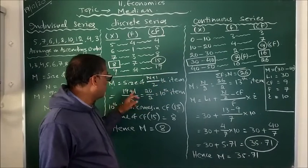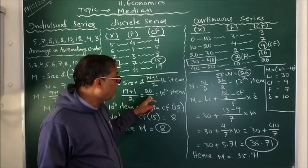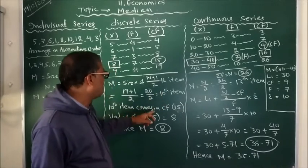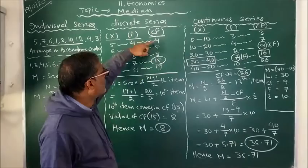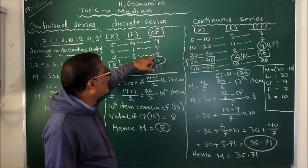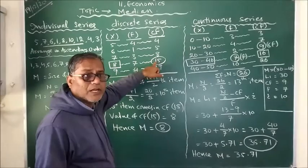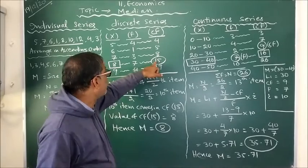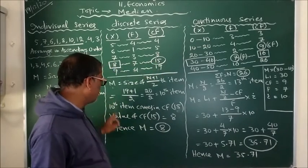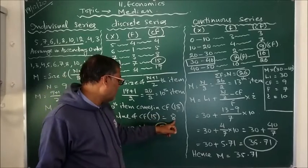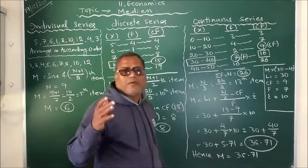So the 10th item in this series — looking at the cumulative frequency column, up to the value 8 the cumulative frequency covers up to 8 items, and the next class covers the 10th item. So the relevant value is 8. Hence the value of median is 8. So in this way we can calculate the value of median in discrete series.